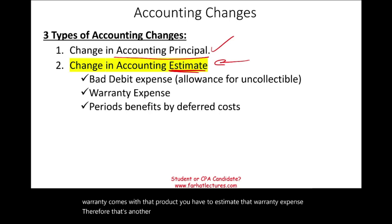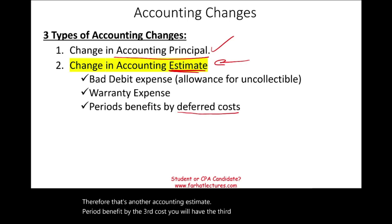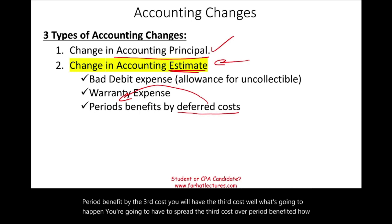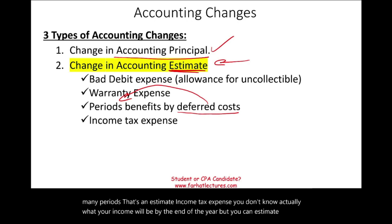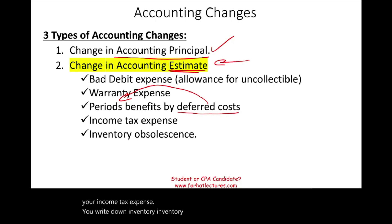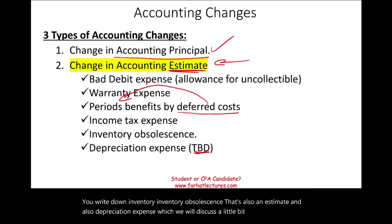Period benefit — you will have the cost and you're going to have to spread that cost over the periods benefited. How many periods? That's an estimate. Income tax expense — you don't know what your income will be by the end of the year, but you can estimate your income tax expense. When you write down inventory, inventory obsolescence, that's also an estimate. And also depreciation expense, which we will discuss in more detail later.